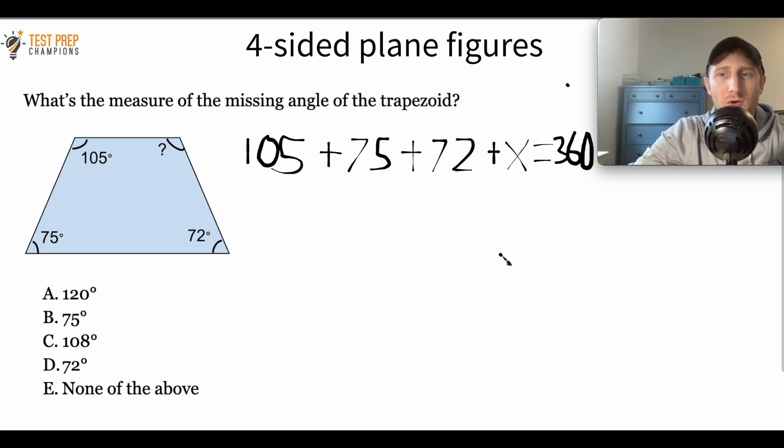If this was a triangle, you would set it equal to 180 because the three internal angles of a triangle add up to 180. But for a four-sided plane figure, all the internal angles add up to 360 degrees.